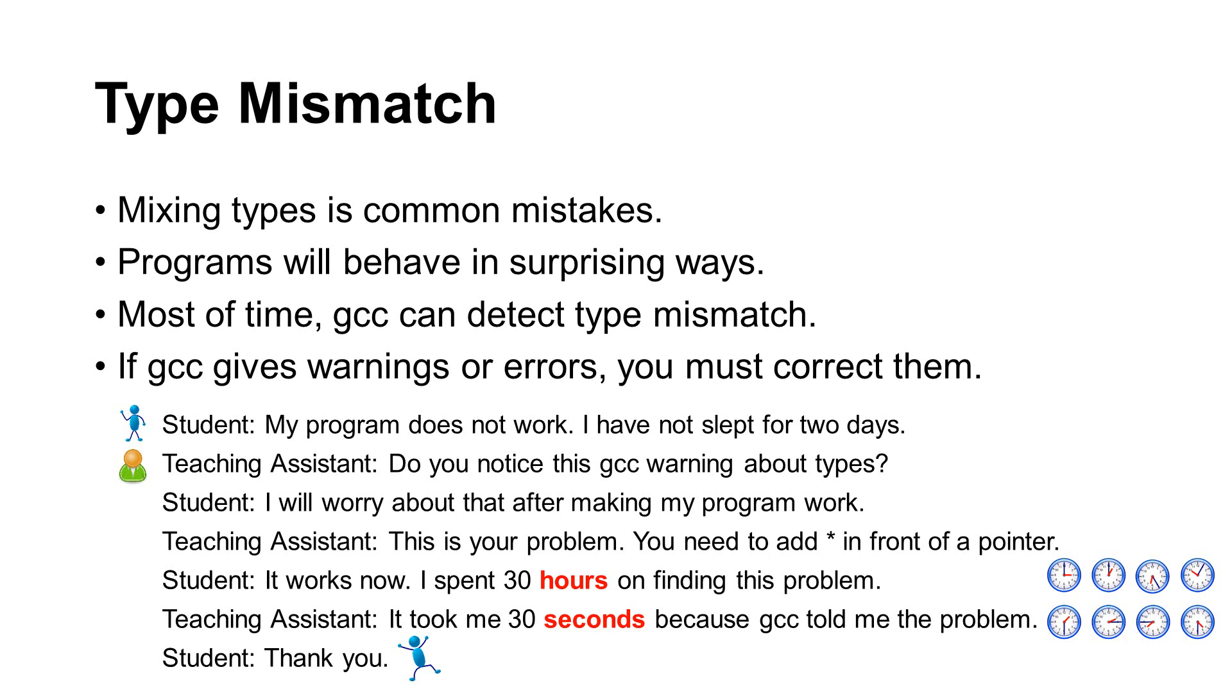The following is a true story. A few years ago, a student came to the office hour of a teaching assistant. The student said, My program does not work. I have not slept for two days. The teaching assistant asked, Do you notice this GCC warning about types? The student said, Yes, I will worry about that after making my program work. The teaching assistant said, This is your problem. You need to add asterisk in front of a pointer. The student said, It works now. I spent 30 hours on finding this problem. The teaching assistant said, It took me 30 seconds because GCC told me the problem. The student happily left the office hour. Please understand that GCC is usually good at detecting type errors.